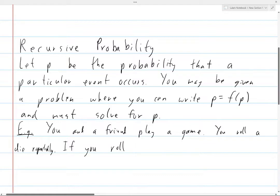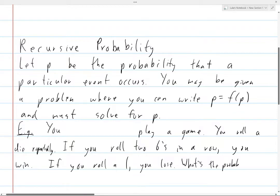If at any point you roll two sixes in a row, you win. I guess you don't really even need the friend in this scenario. If you roll two sixes in a row, you win. If you roll any one at any point, you lose. What's the probability that you win?